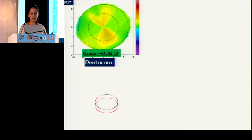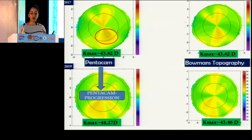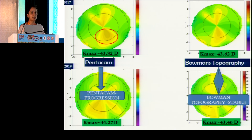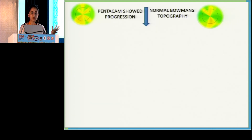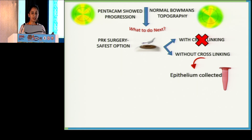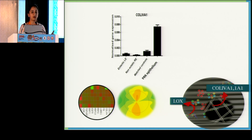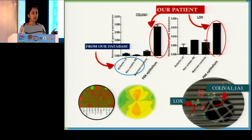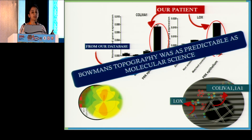This patient came to us for refractive surgery and we were not sure if there was progression. We did Bowman's topography, which was clearly stable — so the epithelium was the culprit. In this mixed picture, we decided PRK was the safest option, but were unsure whether to accompany it with cross-linking. We collected the epithelium to analyze it for known ectatic risk factors like LOX levels and collagen, and found the patient had relatively normal levels from our database. So Bowman's topography was as predictable as the molecular sciences.